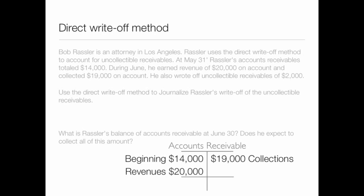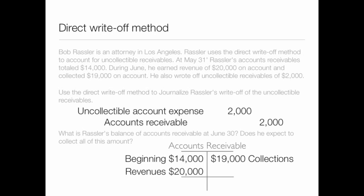Using the direct write-off method to journalize Rassler's write-off of the uncollectible receivables: we debit uncollectible account expense for $2,000 and we credit accounts receivable for the accounts we are actually writing off — specifically the accounts receivable subsidiary ledgers with the customer name attached.